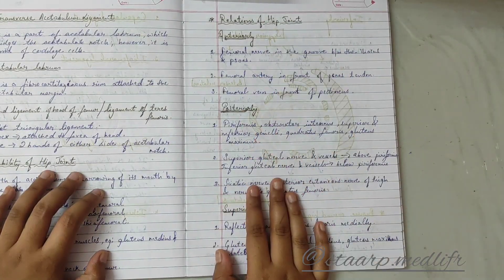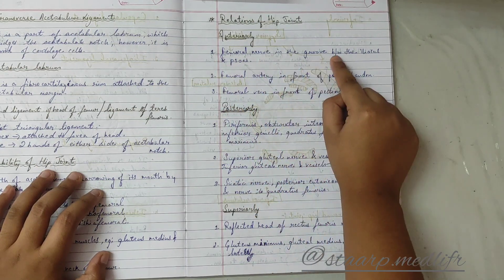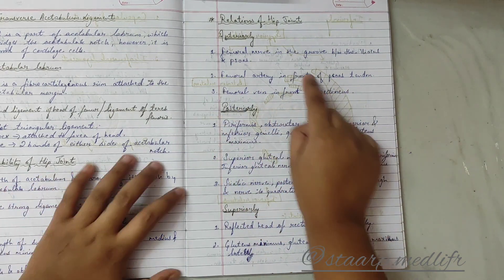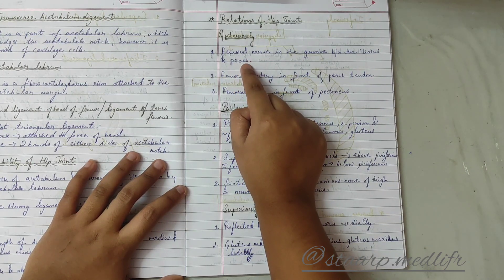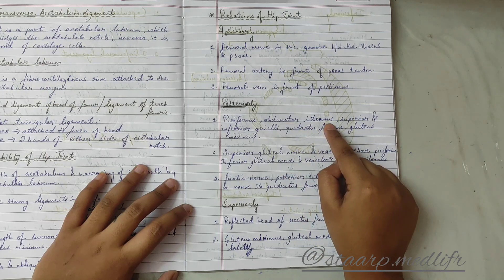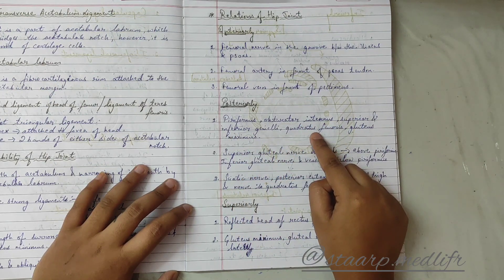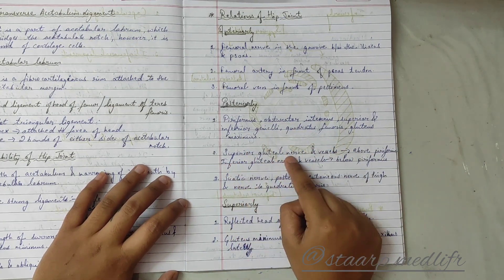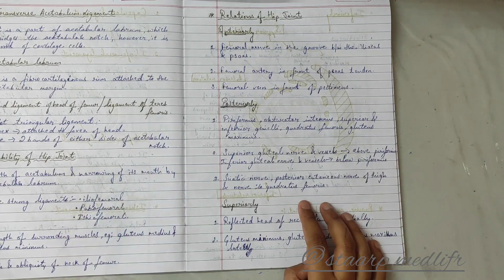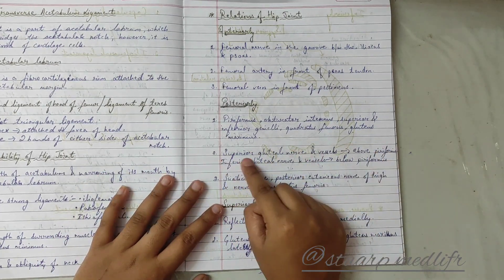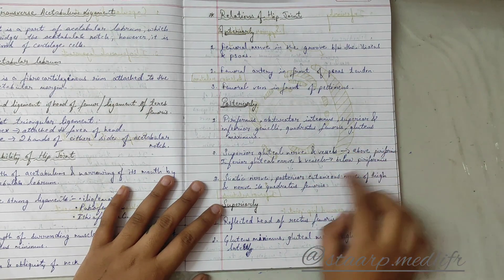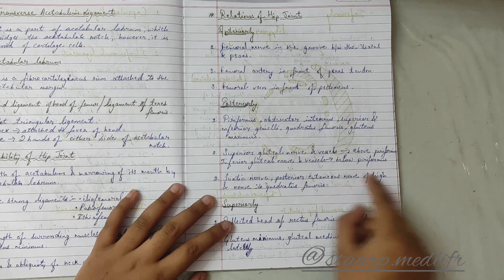The relations of the hip joint are as follows. Anteriorly: the femoral nerve in the groove between iliacus and psoas, the femoral artery in front of the psoas tendon, and the femoral vein in front of pectineus. Posteriorly: piriformis, obturator internus, superior and inferior gemelli, quadratus femoris, and gluteus maximus. The superior gluteal nerve and vessels lie above piriformis, and the inferior gluteal nerve and vessels lie below piriformis. Also posteriorly: the sciatic nerve, posterior cutaneous nerve of the thigh, and nerve to quadratus femoris.